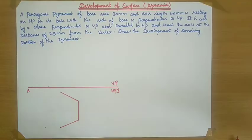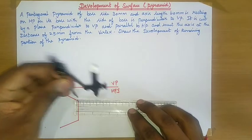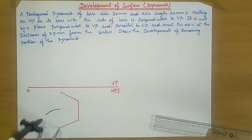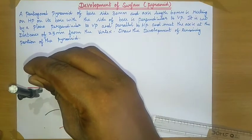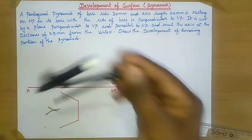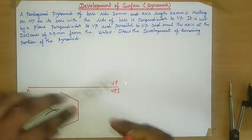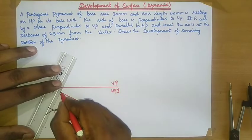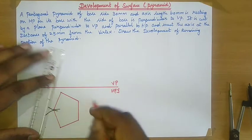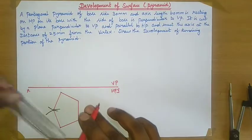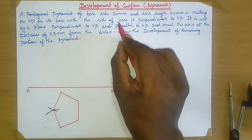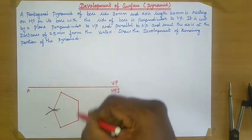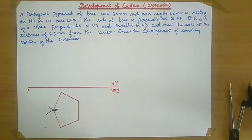Now take your compass, set a measurement of 30 mm, place your compass on this point and cut an arc. Now take your compass on this point and cut an arc. Join these two points and join these two lines. We now have the pentagon with the base side perpendicular to VP. Name this as the top view.